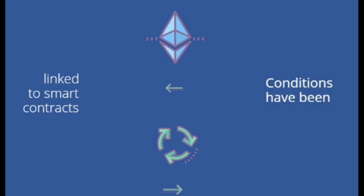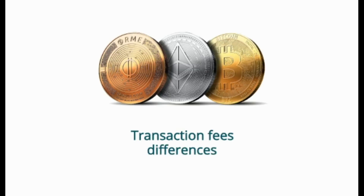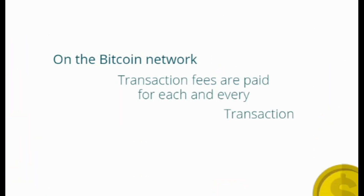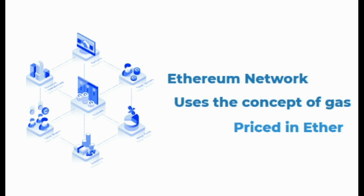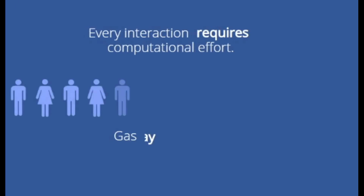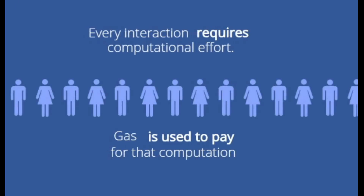Transaction fee differences: on the Bitcoin network, transaction fees are paid for each and every transaction. These fees go to the miners who validate transactions and place them into a block. The Ethereum network uses the concept of gas, priced in Ether, instead of transaction fees. Every interaction with the Ethereum blockchain requires a certain amount of computational effort, and gas is used to pay for that computation.